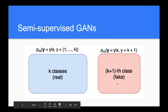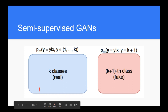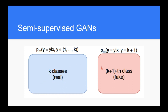This graph illustrates it better. You have the K real classes, then you have the K plus one class for the fake class. The discriminator just does classification over K plus one classes.